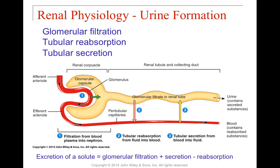Inside the glomerular capsule, the afferent arteriole feeds in blood supply, things leak across those fenestrations into the Bowman's capsule, and that filtrate ends up in the renal tubule. Anything that doesn't leak out heads through the efferent arteriole. The efferent arteriole then picks up things filtered out from the glomerular filtrate in the renal tubule — that's called tubular resorption. Total excretion equals the glomerular filtration rate plus the amount secreted minus the amount resorbed.